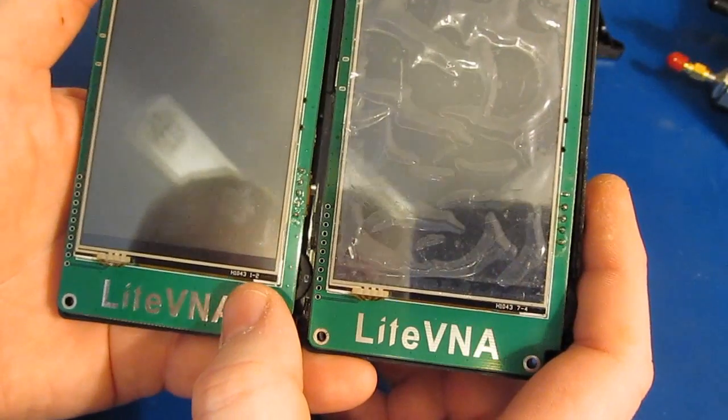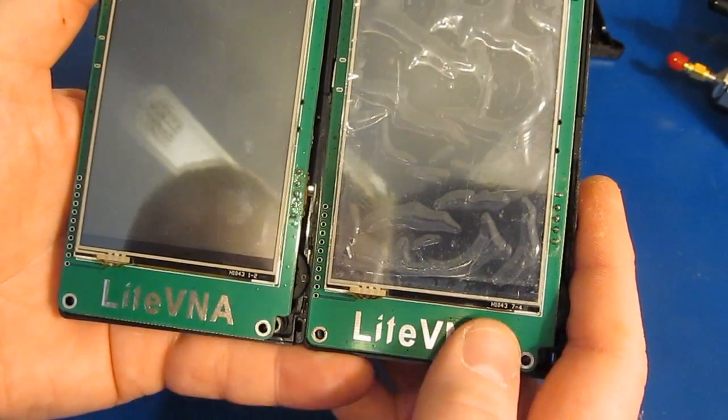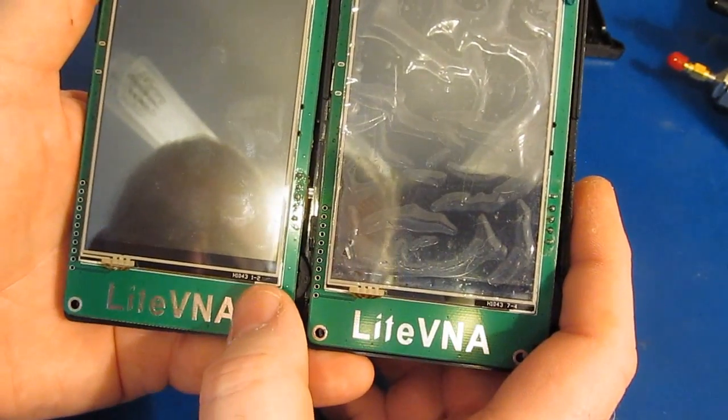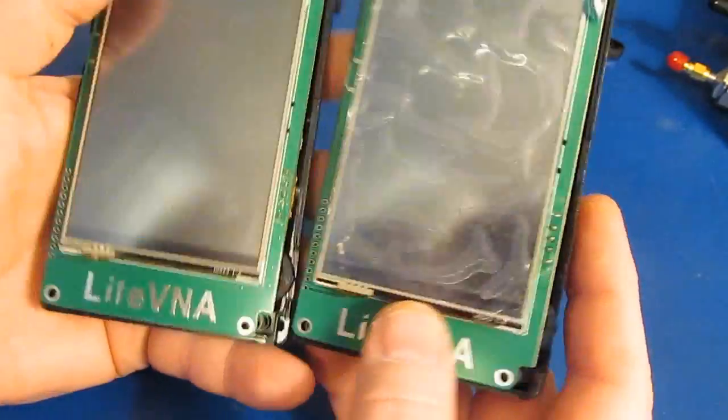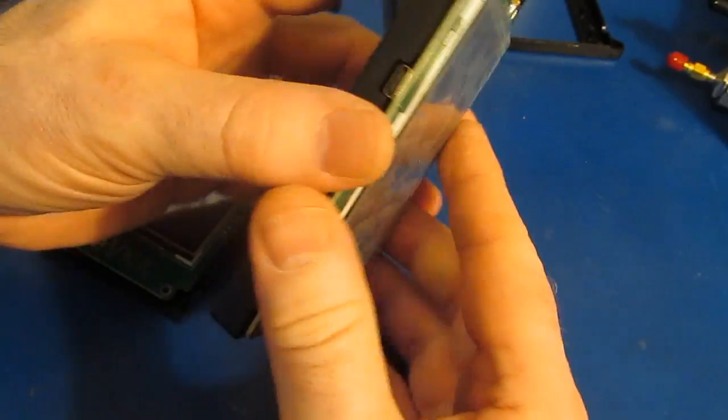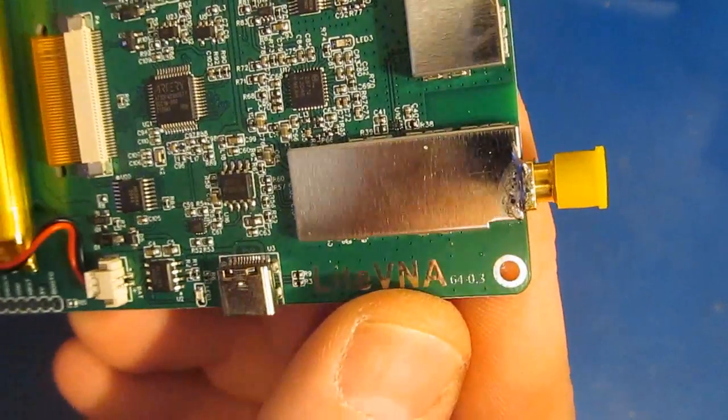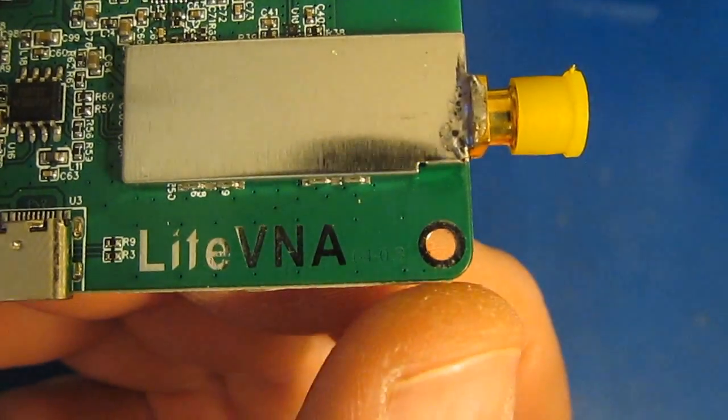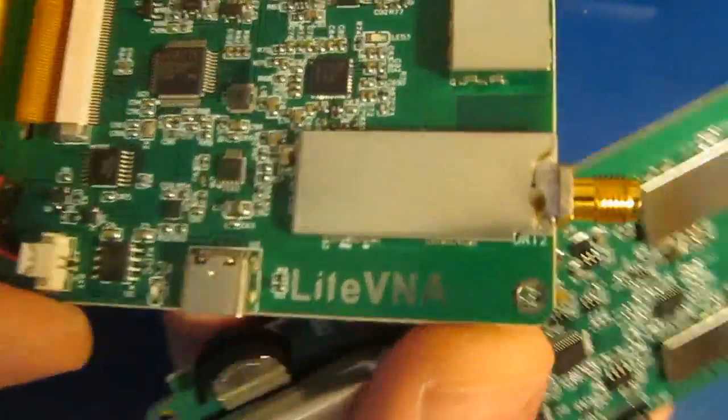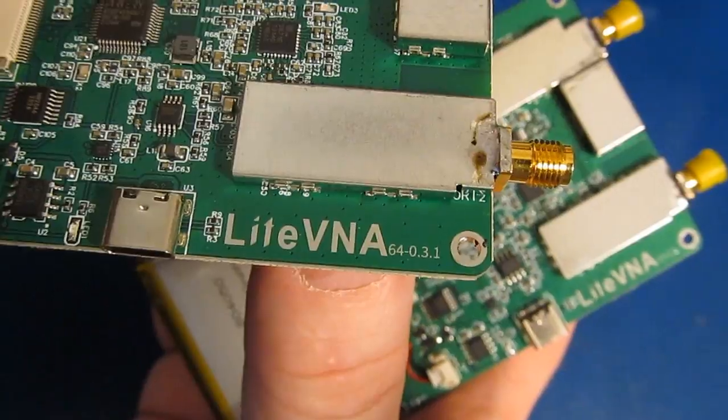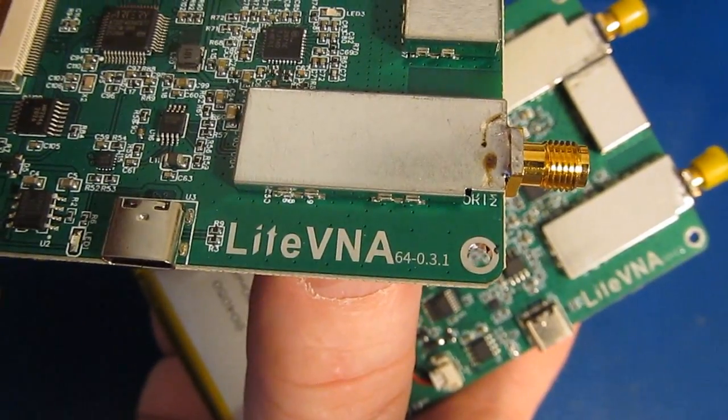Okay you can see both displays are marked H1043. The older one is a 7-4 where the new one is a 1-2. But they appear to be the same. Let's go ahead and lift the circuit board out of here. First thing we'll notice in the lower right corner you can see a 64-0.3. On the new circuit board we can see it's a 64-0.3.1.